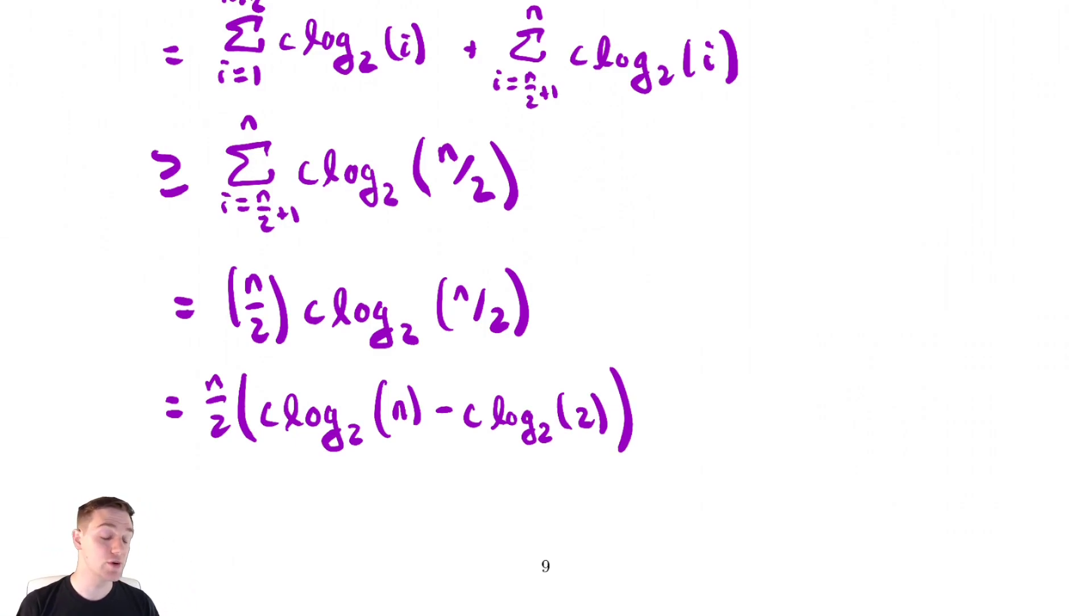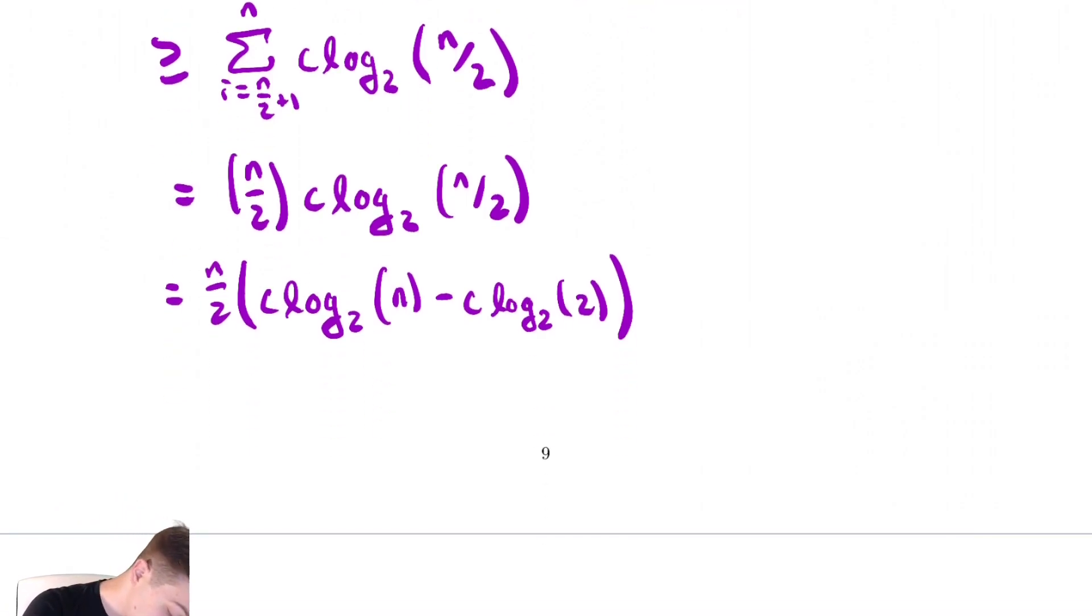This equals n over 2 times c log base 2 of n minus c log base 2 of 2. If we want to show this from the definition and get this exactly to a constant times n log n, which is what we might suspect is going to happen here, we need to do a bit of work, which is a bit tedious, but I'll show it once just so we can remember that this is how we would do it.